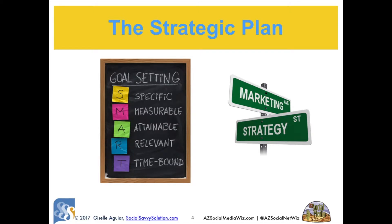We talked about SMART goals way back in the first master class. I hope you've come up with several SMART goals that are specific, measurable, attainable, relevant, and time-bound. You also need an overall strategy written down, descriptions of your target market personas, any research you've uncovered, a content marketing strategy specifically for each of the networks, and your major keywords and hashtags. You should write out some tweets and posts and keep them in a text or document file for easy access.